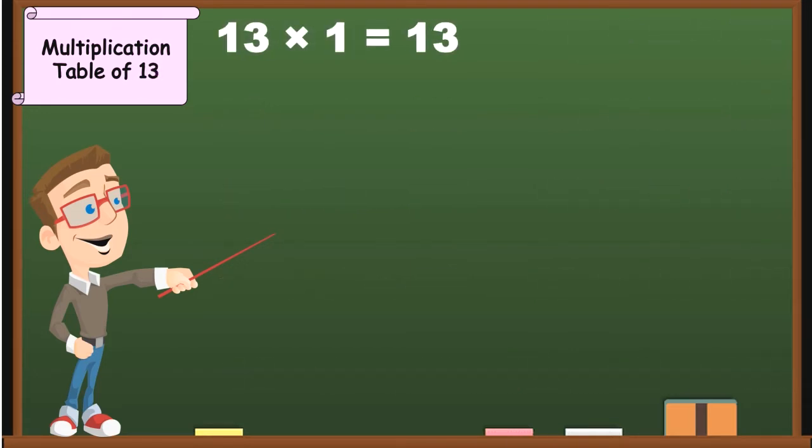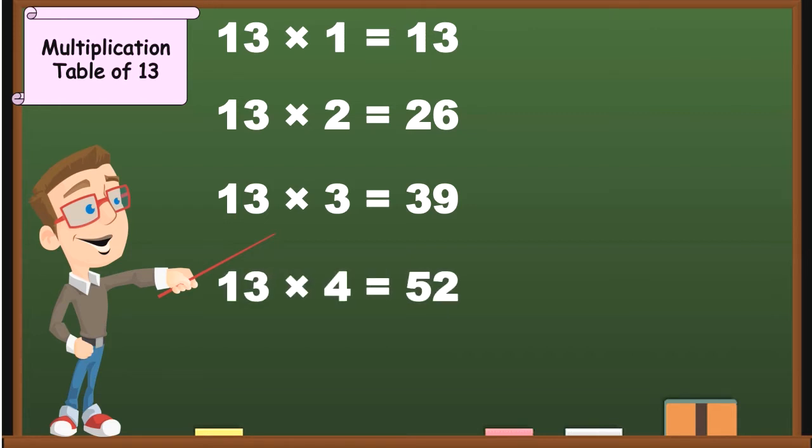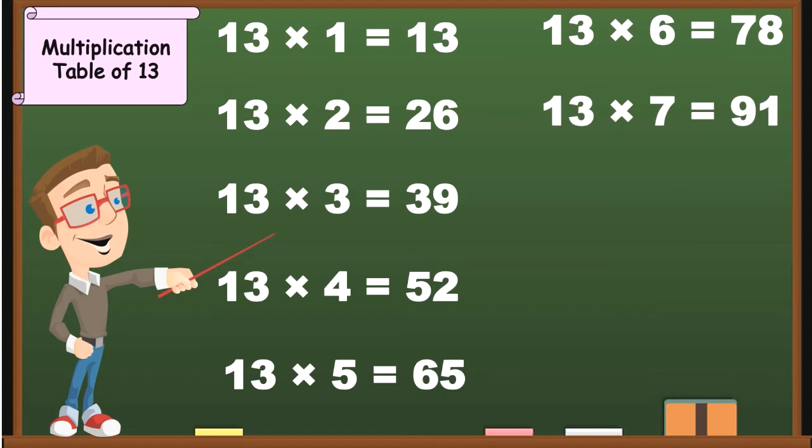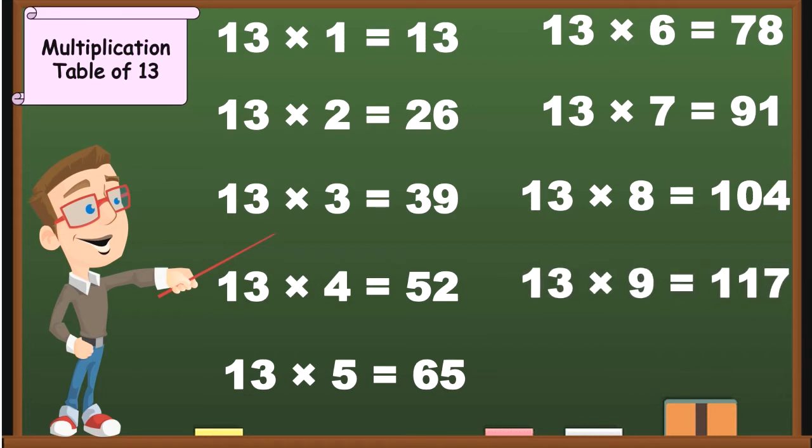13 1's are 13, 13 2's are 26, 13 3's are 39, 13 4's are 52, 13 5's are 65, 13 6's are 78, 13 7's are 91, 13 8's are 104, 13 9's are 117, 13 10's are 130.